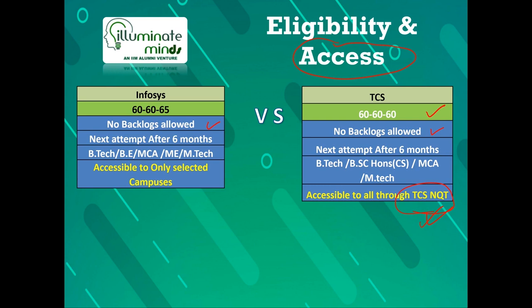In case of Infosys, it's 60/60/65 — so 10th 60 plus, 12th 60 plus, and B.Tech or BE up to 6th semester is 65 plus. In both companies, no backlogs are allowed at the time of writing the examination, nor at any later point, nor at the point of joining. Also, if you have attempted the test and were unsuccessful, you won't be allowed to write for that company for the next six months.